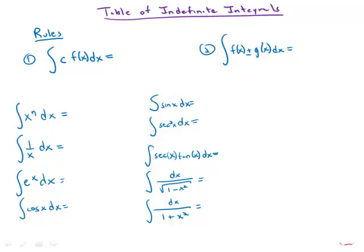So first of all, if we have the integral of a constant c times f of x, well then we can simply factor that constant out of the indefinite integral. So it will just be the constant times whatever the indefinite integral of f of x is.